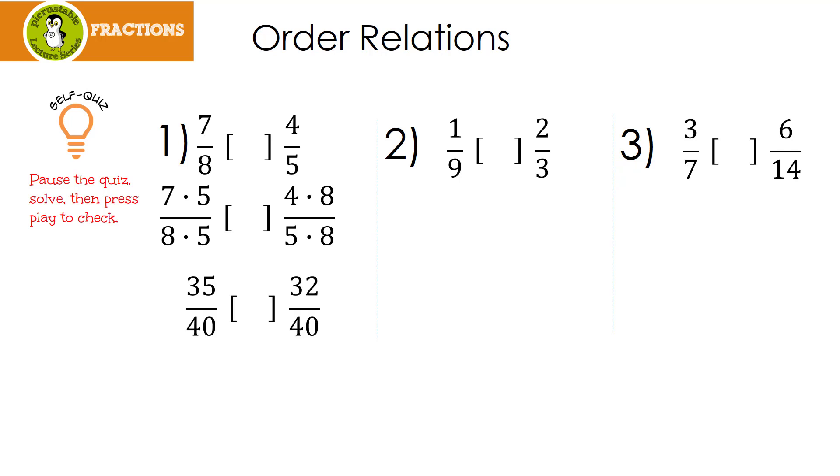This gives me 35 over 40 and 32 over 40. Which is bigger, 35 or 32? Yeah, 35. So that means that 7 eighths is larger than 4 fifths.